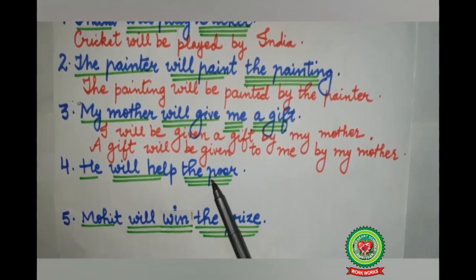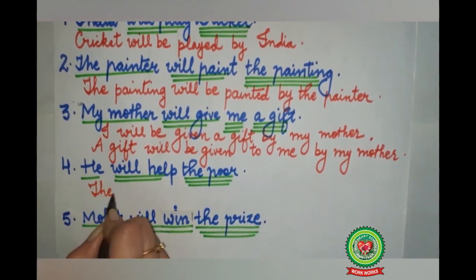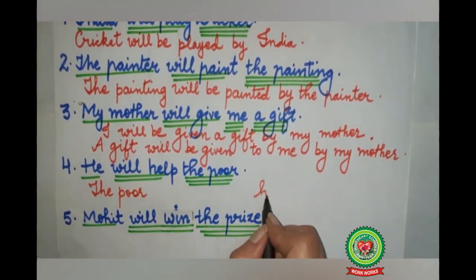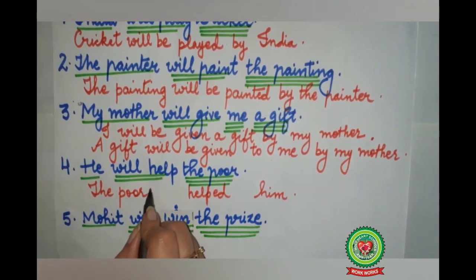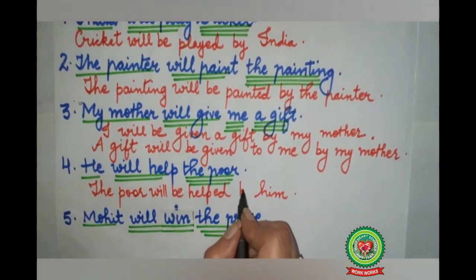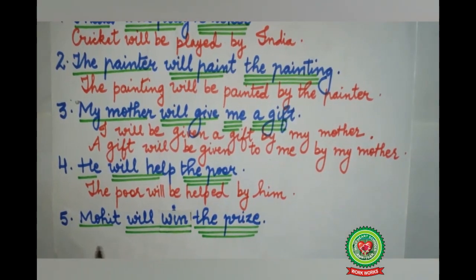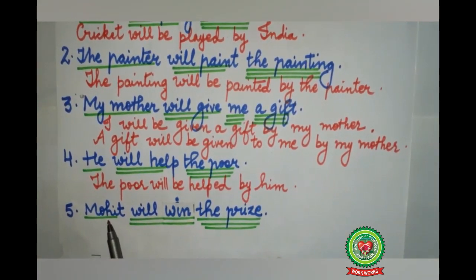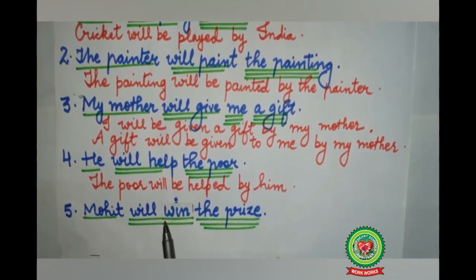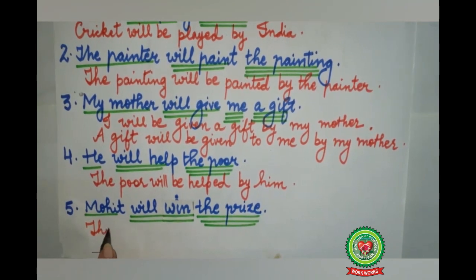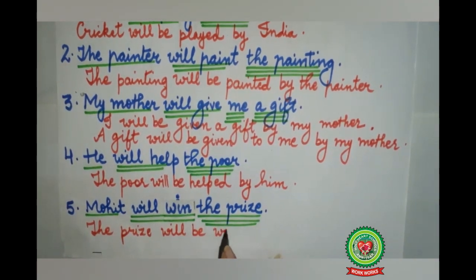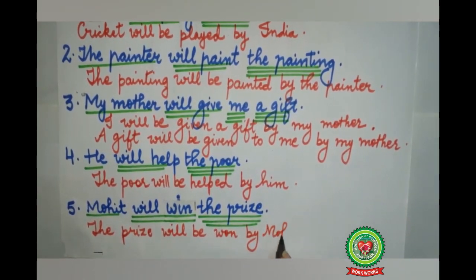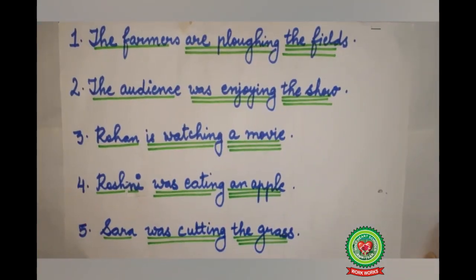Now see the fourth sentence: 'He will help the poor.' Who? He — subject, single underline. 'Will help' — action word, double underline. Whom? The poor — triple underline. The poor comes in the beginning, he goes to the last and becomes 'him', 'help' changes to 'helped'. The fifth sentence: 'Mohit will win the prize.' Who? Mohit — subject, single underline. 'Will win' — action word, double underline. What? The prize — triple underline. The answer becomes: 'The prize will be won by Mohit.' Full stop.